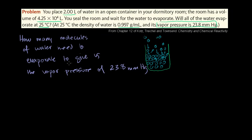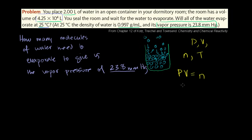What formula deals with pressure? They give us the volume of the room, because that's where the pressure will be. So we have pressure — the equilibrium vapor pressure — a volume, a temperature, and we're trying to figure out the number of molecules that need to evaporate for us to get that pressure in that volume at that temperature. What deals with pressure, volume, number of molecules in moles (n), and temperature? We've seen this many times: it's the ideal gas law. Pressure times volume equals the number of moles of our ideal gas — in this case water vapor — times the universal gas constant, times temperature.